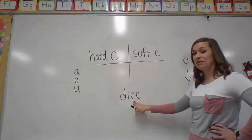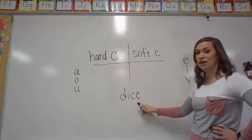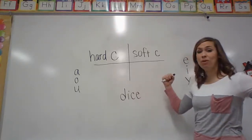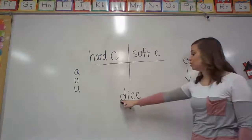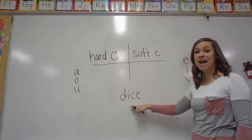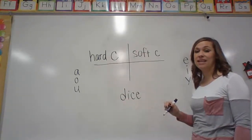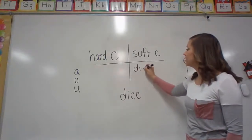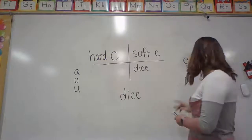Now another thing I noticed about this word right away is it's got a magic E at the end. So that means it's going to give the I the power to say its name. So this word is going to say Dice. Dice. And that's the soft C sound. So we're going to put dice over here.